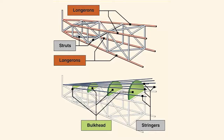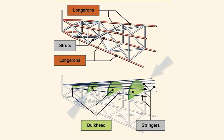Additional struts are needed to increase strength and handle stresses that may occur from any direction. Stringers and bulkheads, or formers, are added to shape the fuselage and support the covering.